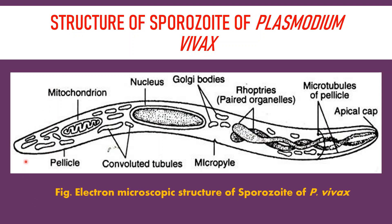As seen in this diagram, the sporozoite is elongated, slightly swollen at the center, and tapering at both ends. The center, thicker part consists of the nucleus. It is a uninucleated organism, and the center of the nucleus consists of a nucleolus.